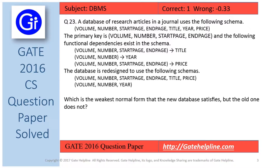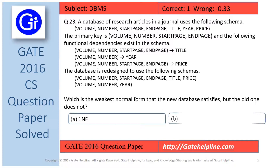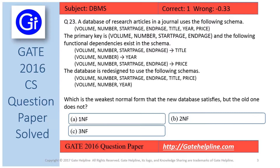Three functional dependencies are given. The database is redesigned to use two new schemas shown below. The question is: which is the weakest normal form that the new database satisfies but the old does not? The options are: A) 1NF, B) 2NF, C) 3NF, and D) BCNF.